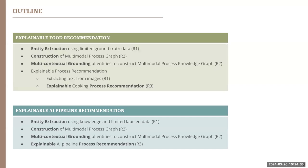The rest of the presentation is structured as follows: we are applying this explainable process recommendation technique into two domains — explainable food recommendation and explainable AI pipeline recommendation. It consists of four major sections: entity extraction; graph construction and multi-contextual grounding of these graphs; and explainable process recommendation. Section one corresponds to research aim one; sections two and three correspond to research aim two; and section four corresponds to research aim three.